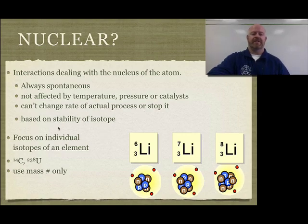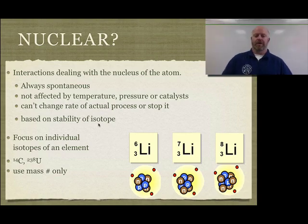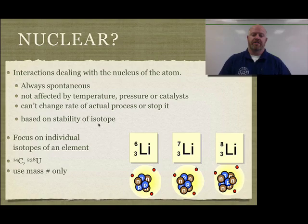And then last but not least, it is based on the stability of an isotope. So if you remember earlier in the year, we talked about isotopes and how isotopes were the individual versions of a single element. And they always differed by a certain number of neutrons in those isotopes.